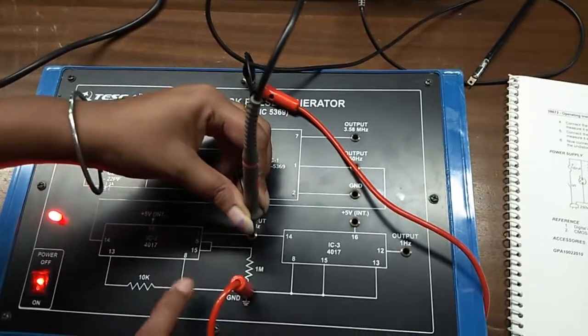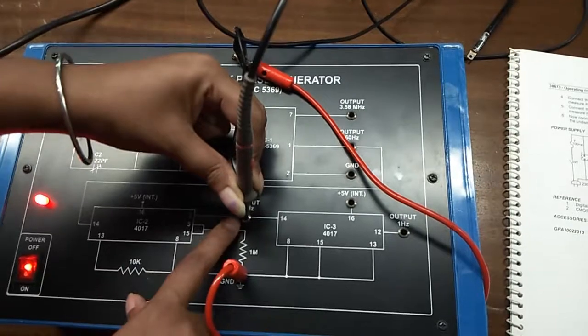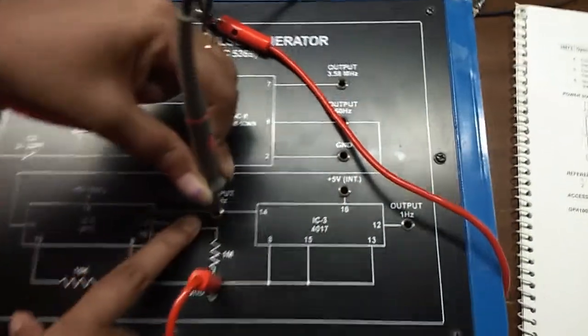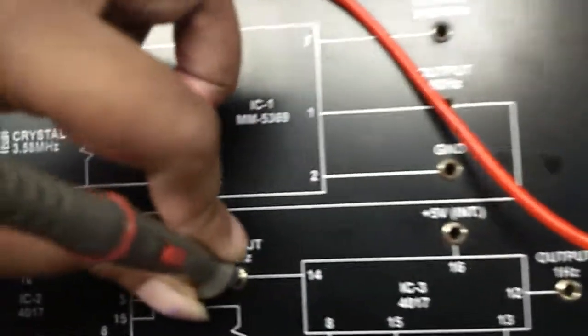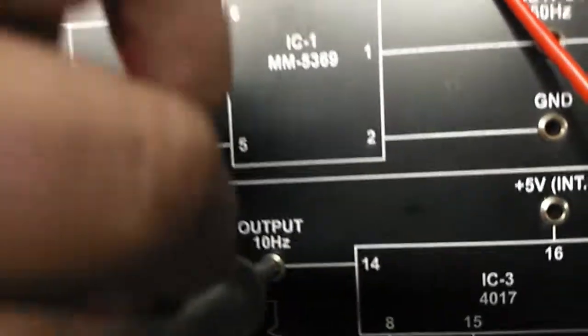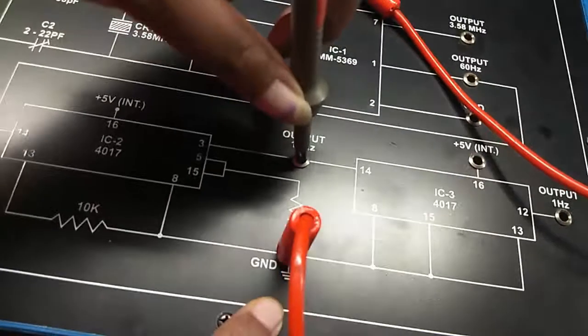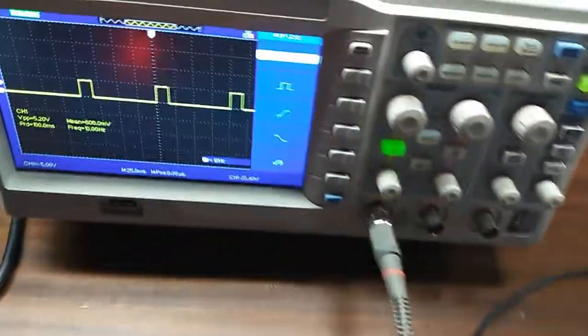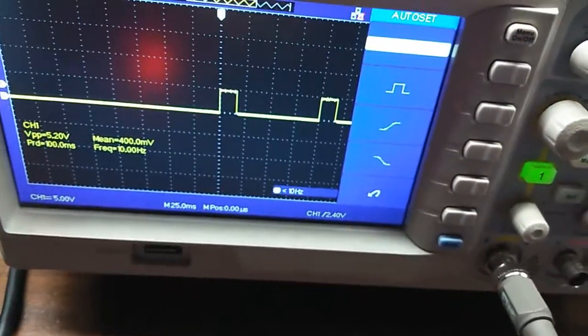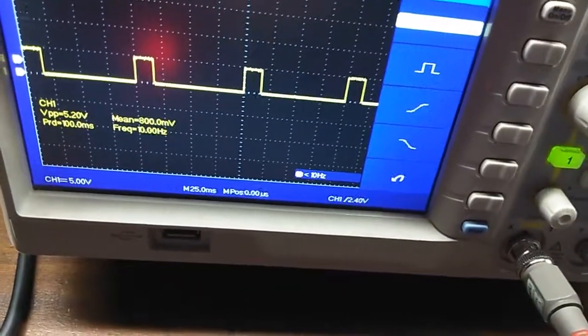Now, we will observe the output waveform of 10 hertz frequency. Connect the CRO probe here at the output 10 hertz and connect the ground connection here. And this is the output waveform of 10 hertz frequency.